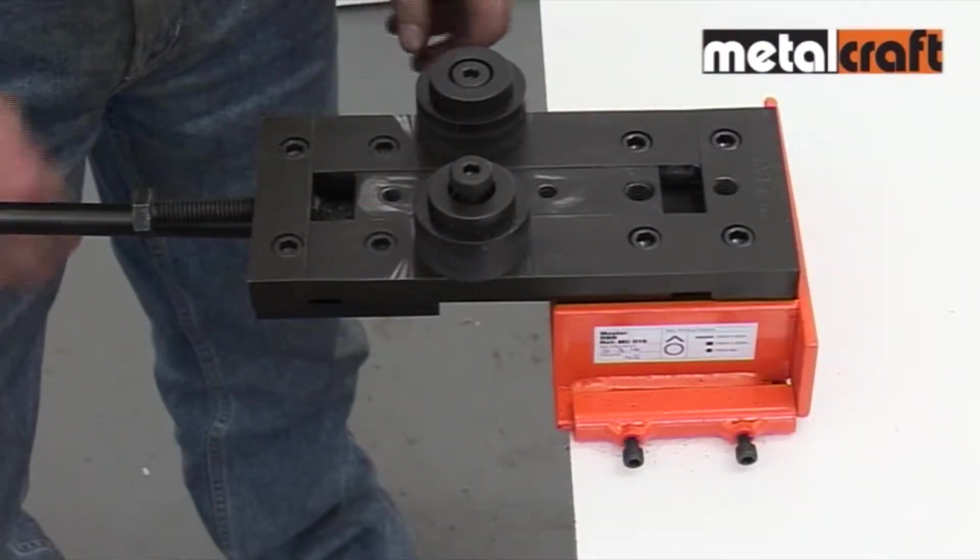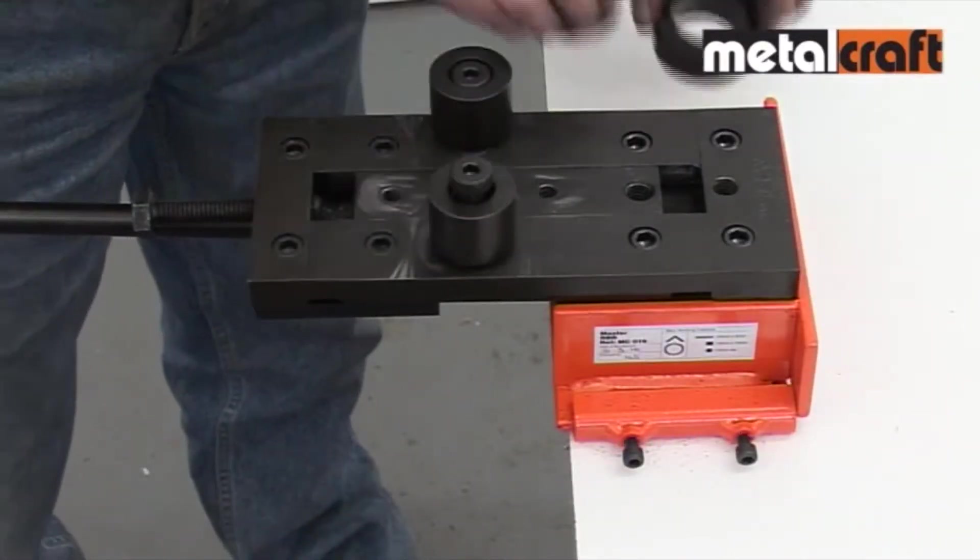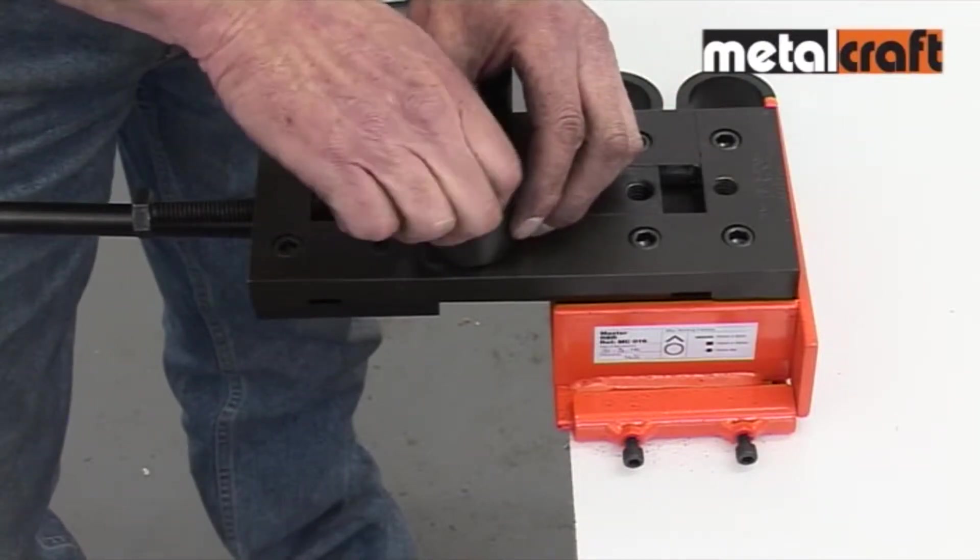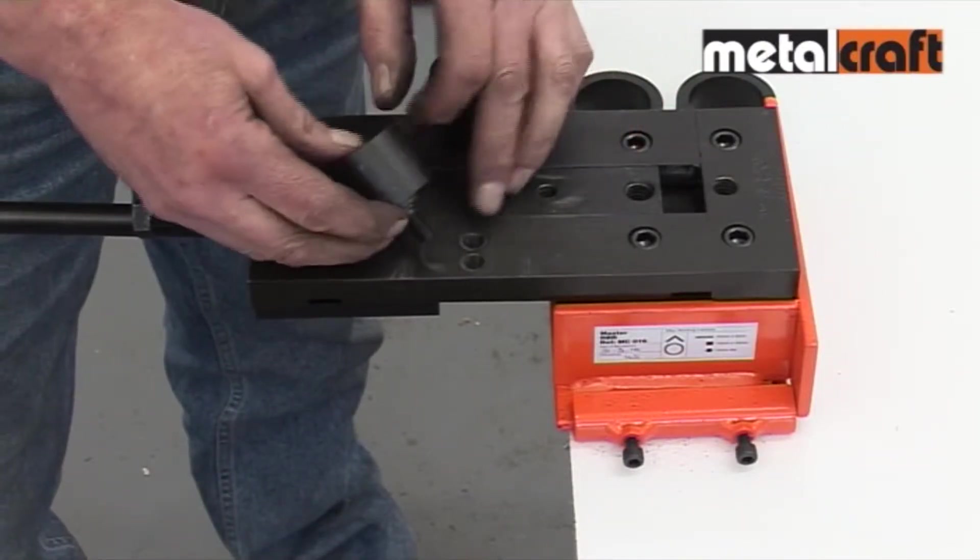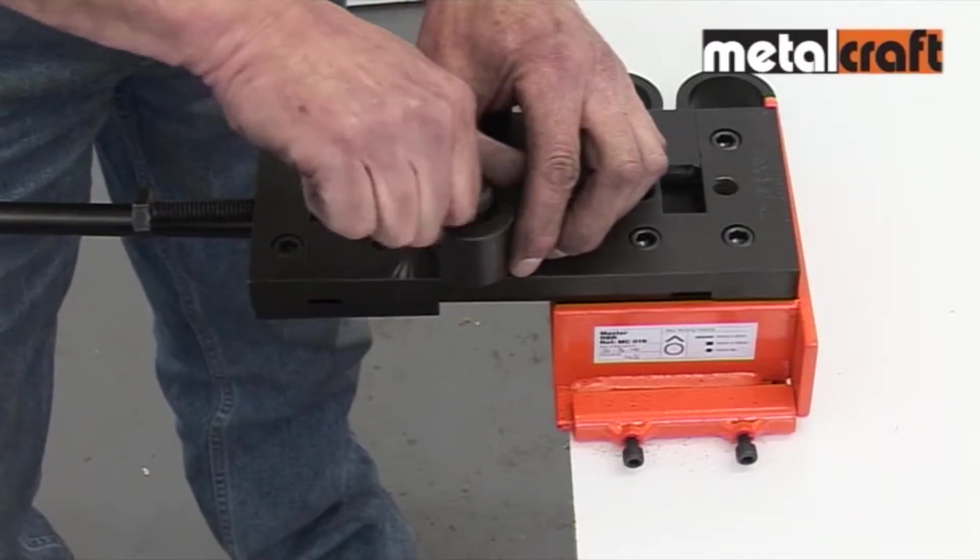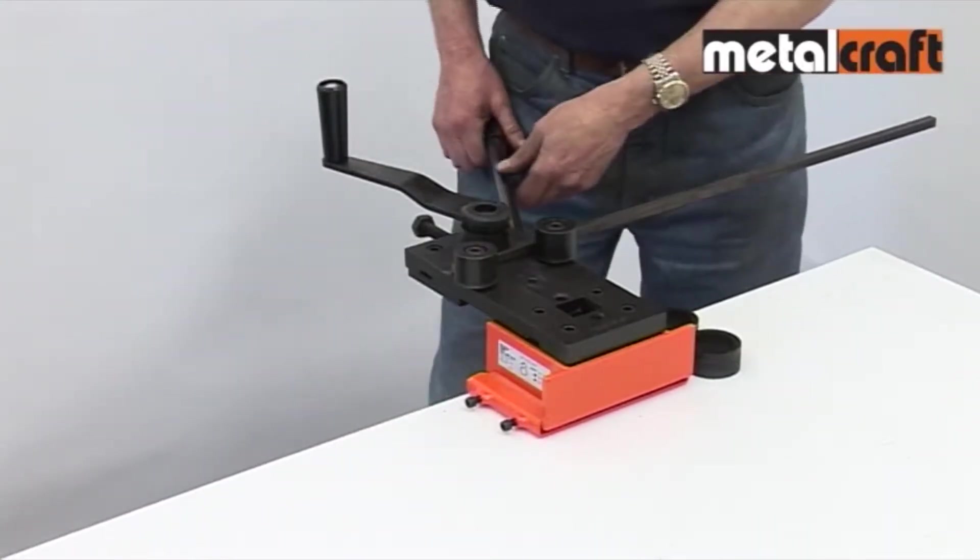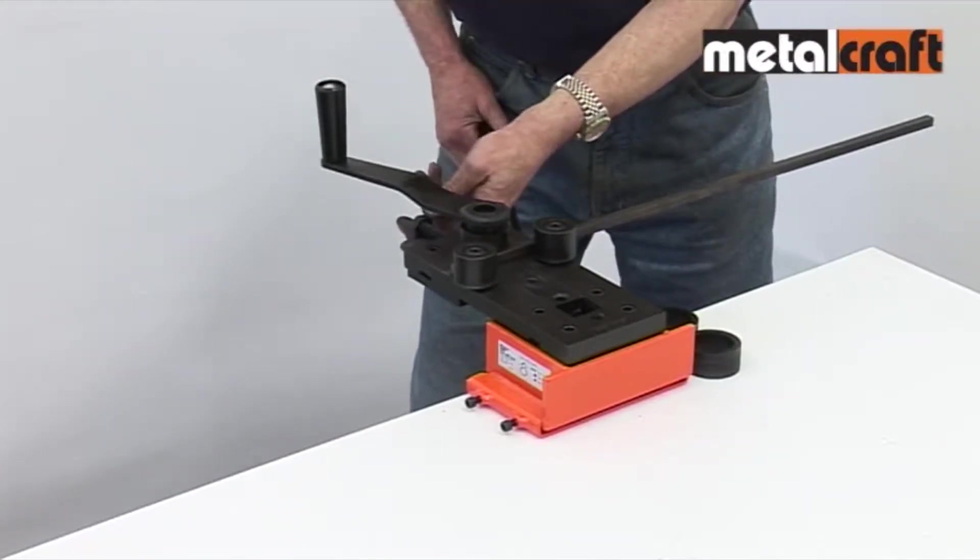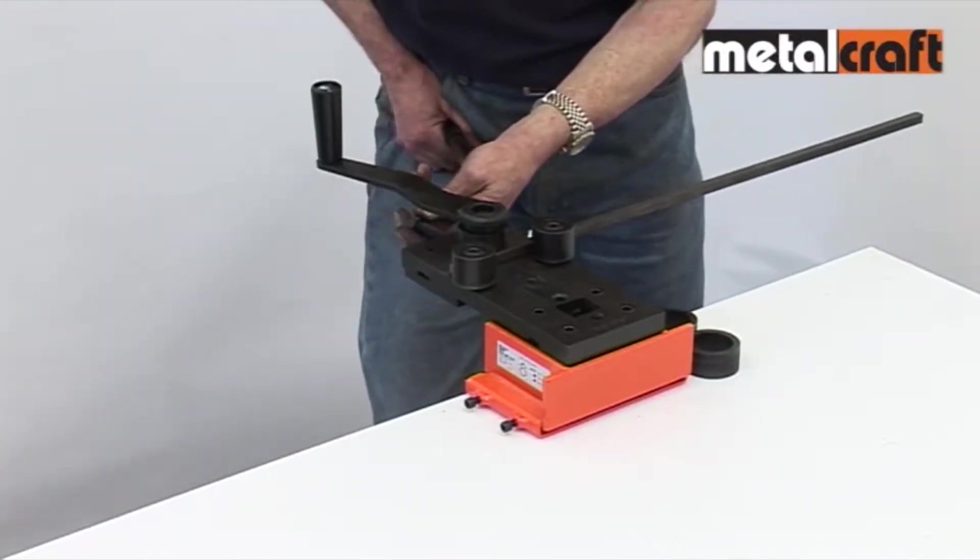To set up the tool for rolling larger bars, remove the side roller sleeves, and simply move the side rollers to the outer hole positions. With the bar placed between the rollers and the winding handle height set, you carry out rolling in the same manner.